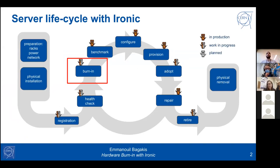Let's take a look at server lifecycle management with Ironic. The first step is preparing the racks, the power, and the network before the servers even arrive. Then the servers are physically installed — this is the moment where the lifecycle of the server begins. It starts with registration of the server into our network databases and registration in Ironic.